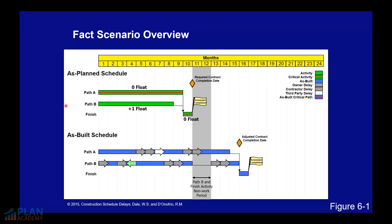The project has been summarized with a hammock activity to path A, which is critical — it has nine months. We have path B at eight months, and both of them are predecessors to this finished activity, which is one month.